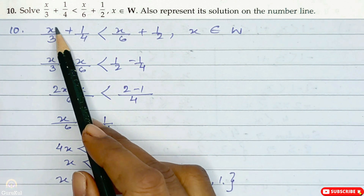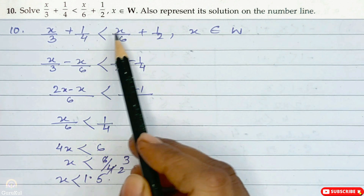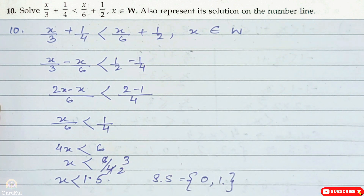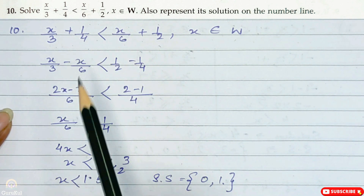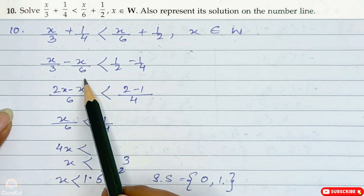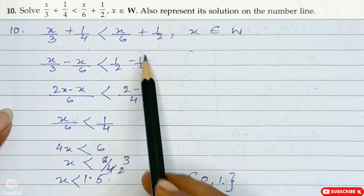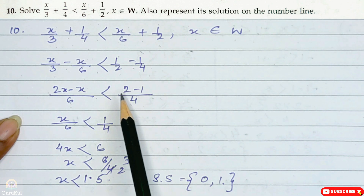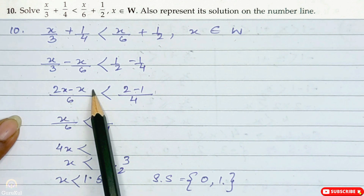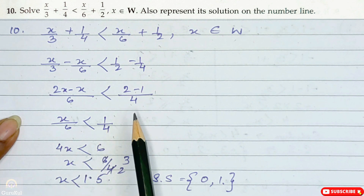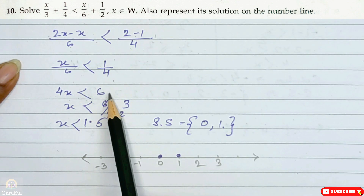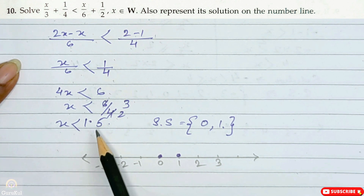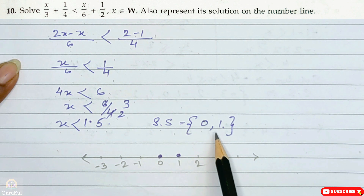Question number 10: solve x by 3 plus 1 by 4 less than x by 6 plus 1 by 2, where x belongs to whole number, and show the solution on the number line. Bring all x to one side: x by 3 minus x by 6 less than 1 by 2 minus 1 by 4. LCM is 6 on the left and 4 on the right: so 2x minus x by 6 less than 2 minus 1 by 4, giving x by 6 less than 1 by 4. Cross multiply: 4x less than 6, so x is less than 6 by 4, which is 3 by 2, meaning x is less than 1.5. Our solution set is 0 and 1.